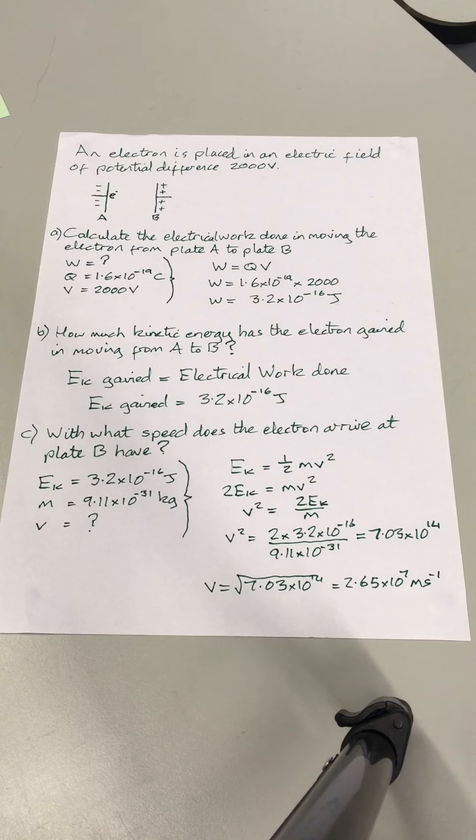You've got EK as a half MV squared. Rearranging it, taking the half to the other side, making it 2EK equals MV squared. Take the mass to the other side, V squared equals 2EK over M. Substitute the values in, and then finally take the square root, and you end up with a speed of 2.65 times 10 to the 7 meters per second.